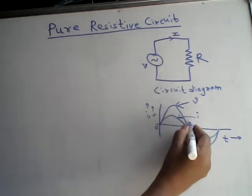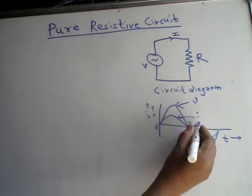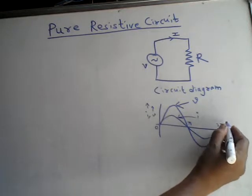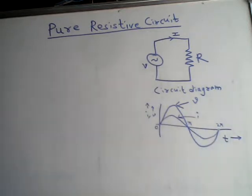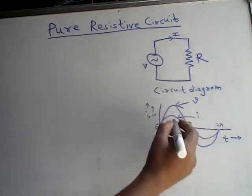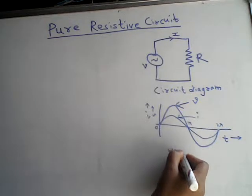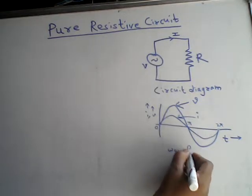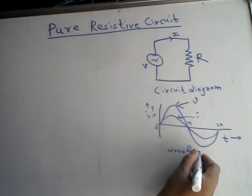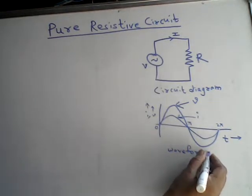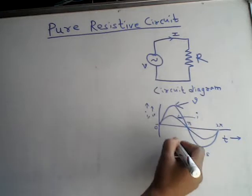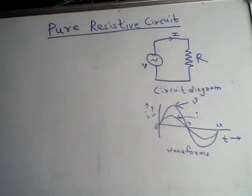On the time axis, this is the pi value and this is 2pi. So these are the waveforms of current and voltage.